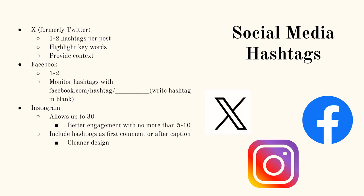Instagram allows up to 30 hashtags per post. However, the platform recommends no more than 5 to 10, as those tend to get the best engagement. Also, a great way to keep your post looking clean is to include those hashtags as the first comment instead of within the caption.